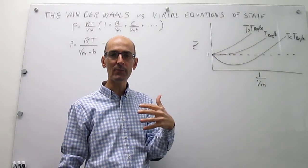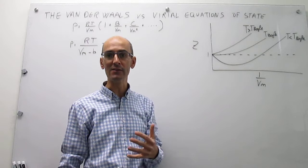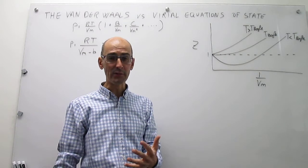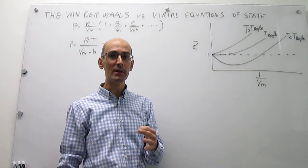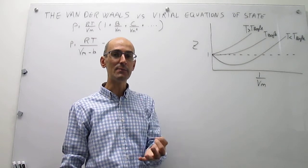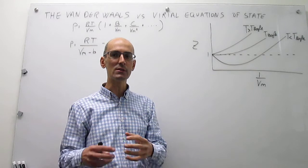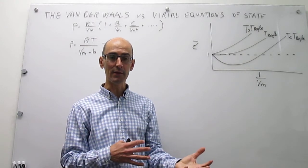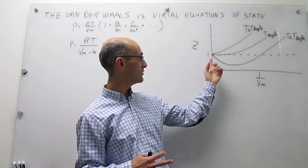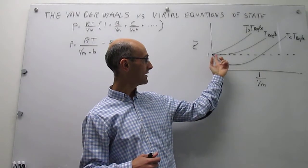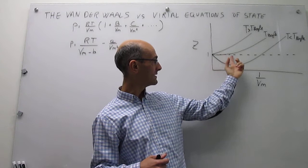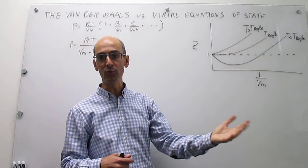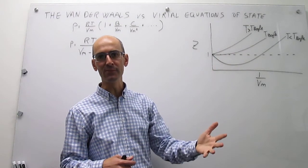We can codify these regimes in terms of what we call the Boyle temperature. The Boyle temperature is the temperature of the gas at which the effect of attractions is perfectly balanced by the effect of repulsions, so you follow ideal behavior — represented by the dashed line — for the longest possible range of pressures or inverse molar volume.